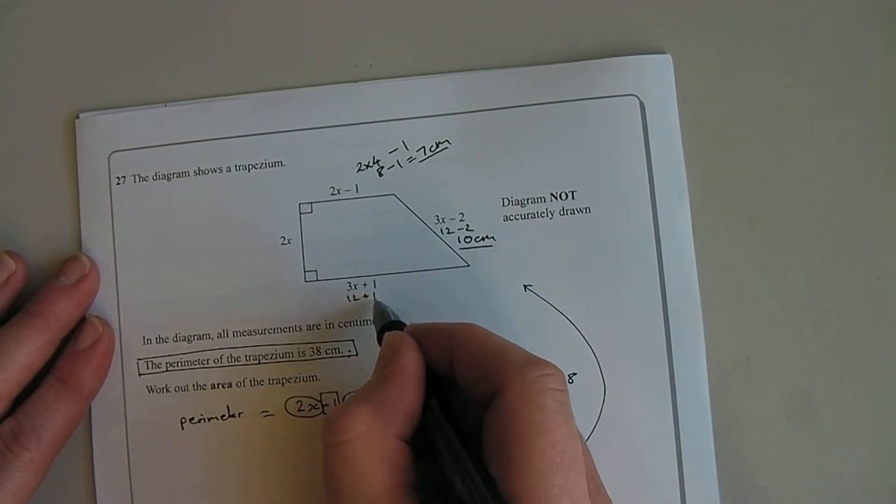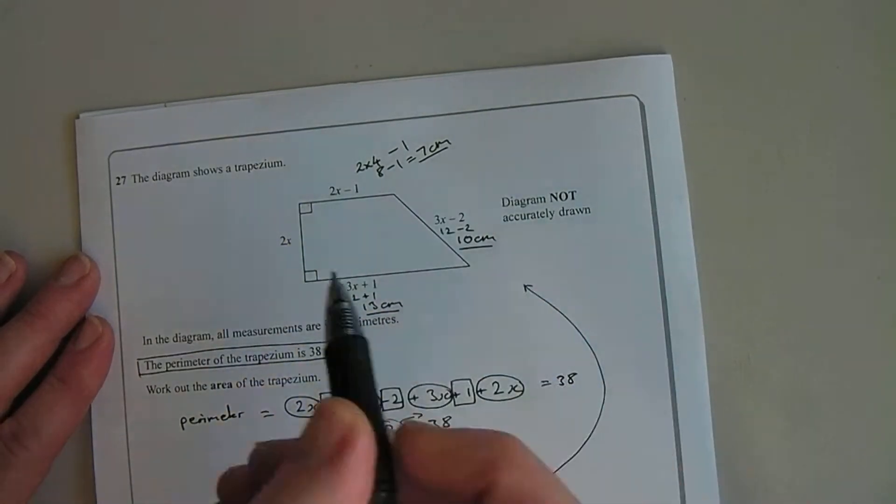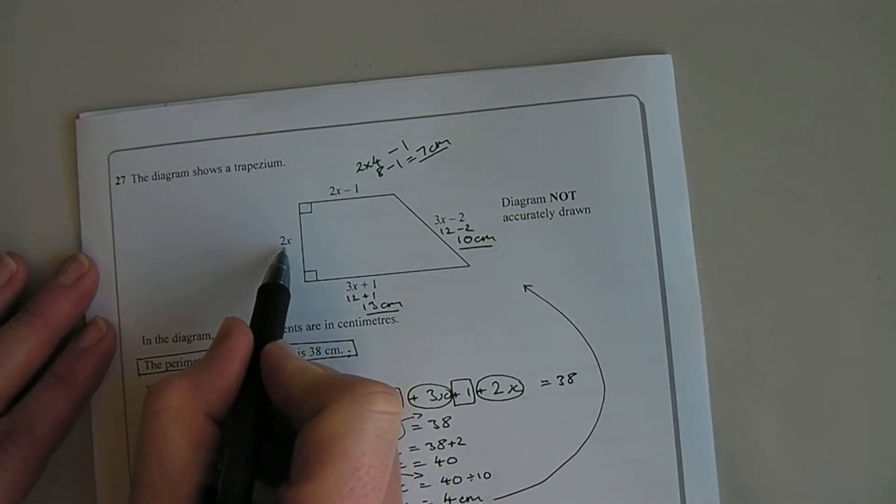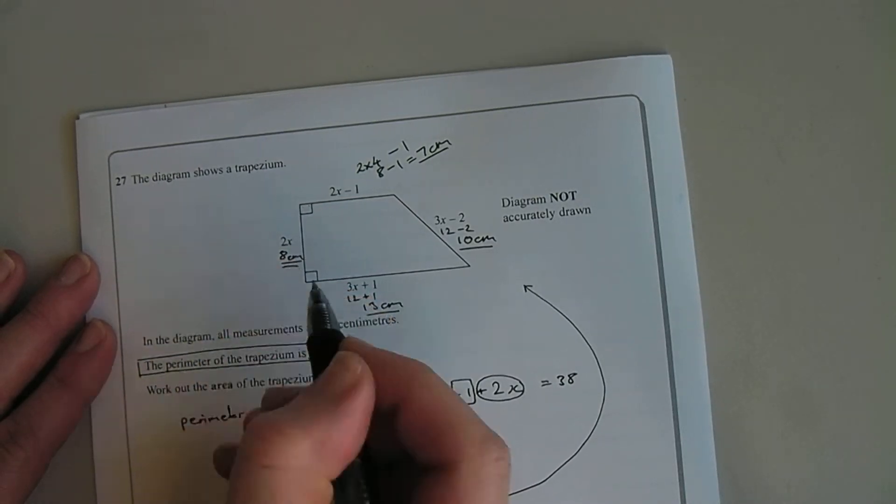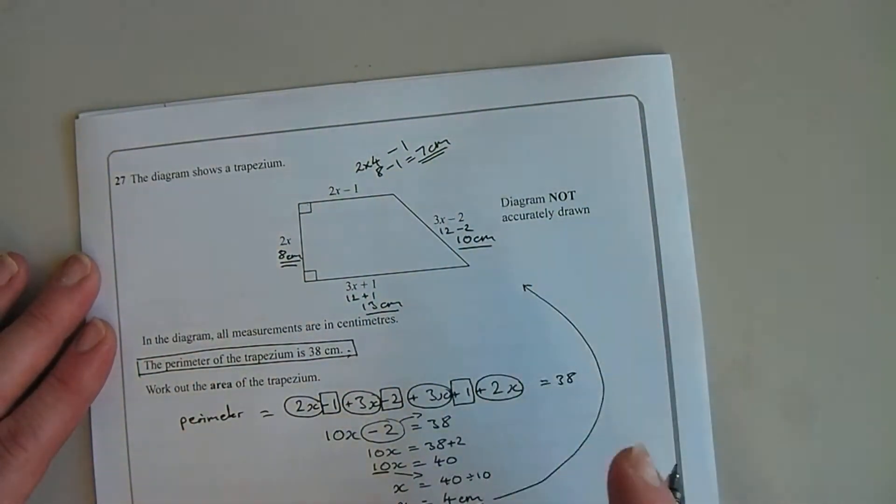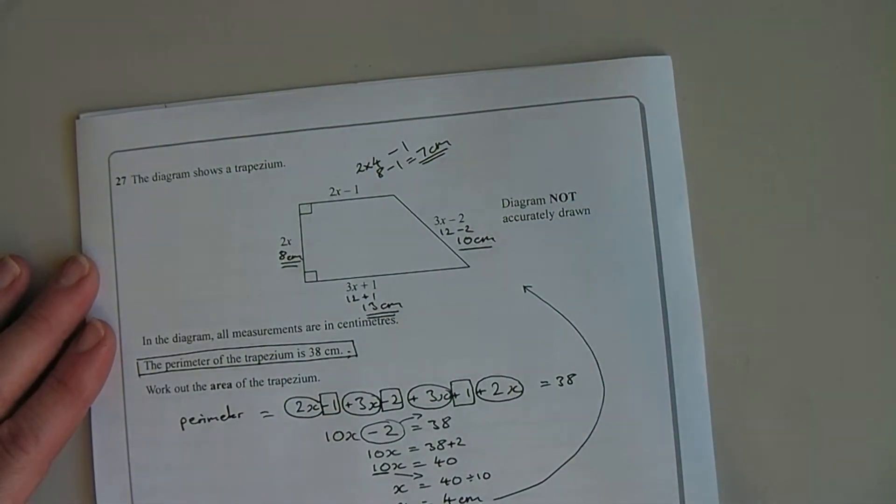The base, which I am going to need, 3 fours are 12 plus 1, so that's 13 centimeters. And the vertical height which I'm going to need is 2 fours are 8 centimeters. So now I know the lengths of all the sides.